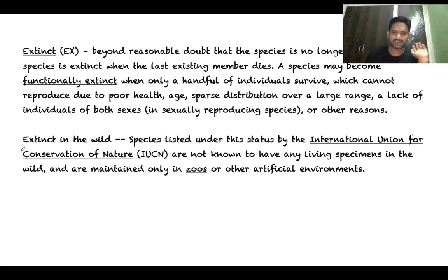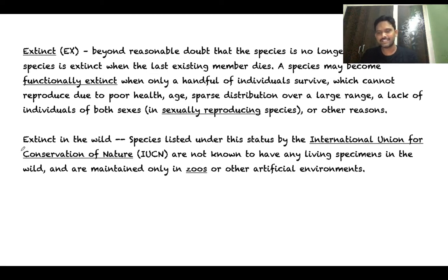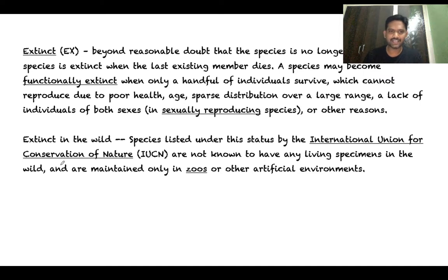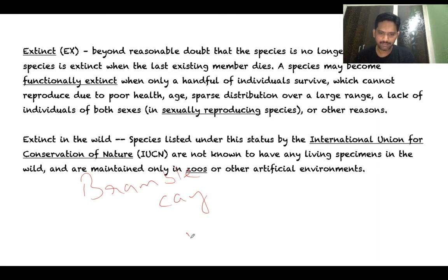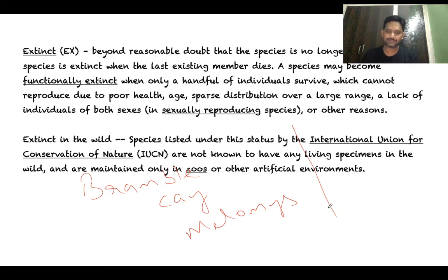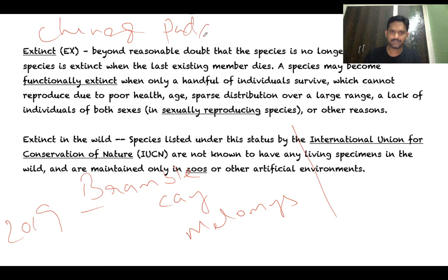IUCN has a category called 'Extinct in the Wild' — meaning the species is not found in the wild and is only maintained in zoos or artificial environments. The Chinese Paddlefish was one of only two living species of paddlefish, the other being the American Paddlefish, which still exists. Of six different paddlefish species historically, five have now become extinct. There is no scope for revival of the Chinese Paddlefish as no individual is kept in captivity and no living tissue is available.